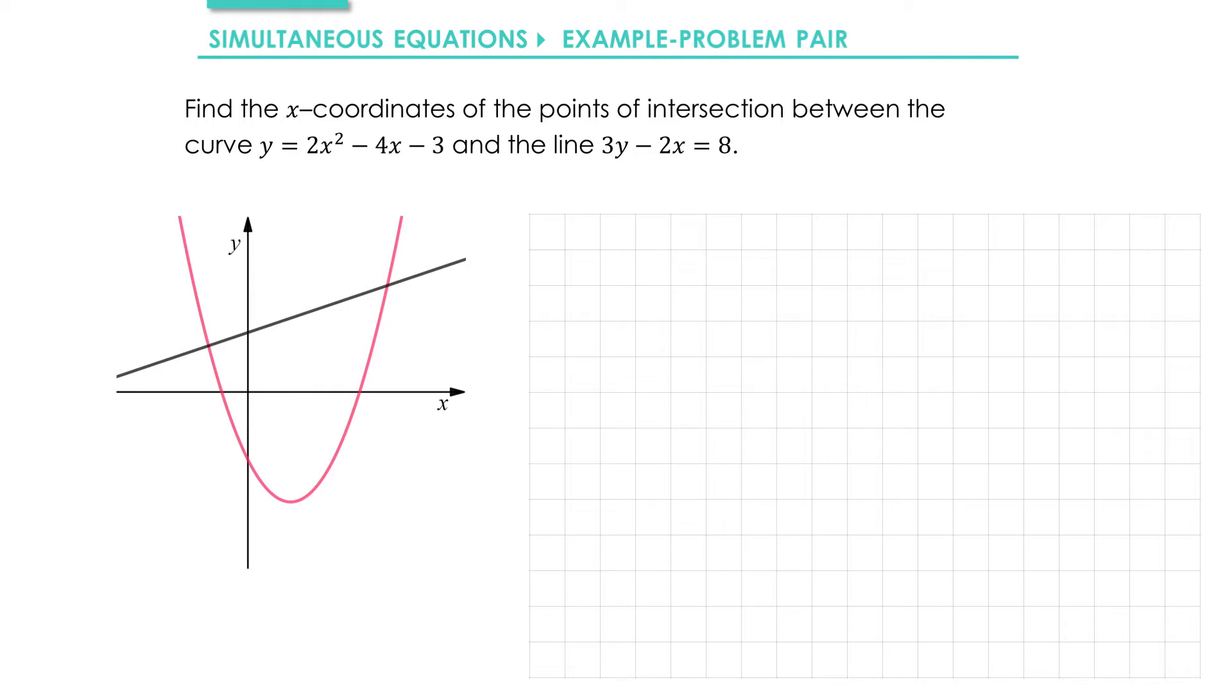On the graph to the left you can see the curve y equals 2x squared minus 4x minus 3 and the straight line 3y minus 2x equals 8. Clearly the curve and the line intersect at two points. The coordinates of those intersection points are given by the solutions to those two equations treated as simultaneous equations.